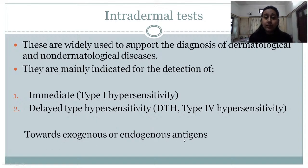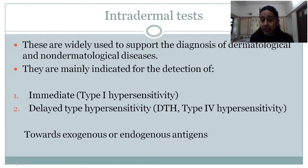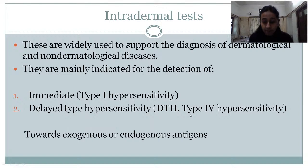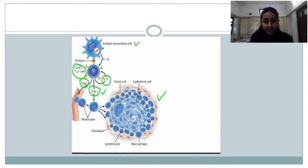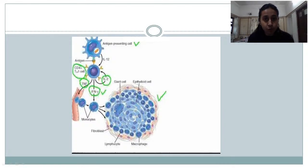There are two types of hypersensitivity reactions against these exogenous or endogenous antigens. The first is immediate, called type 1 hypersensitivity reaction, and the other is delayed, called type 4 hypersensitivity reaction. This picture shows us the type 4 or delayed hypersensitivity response.